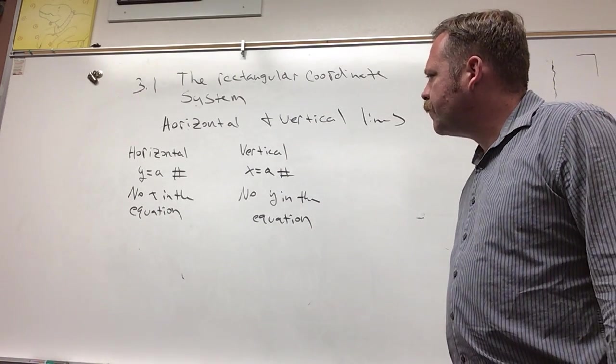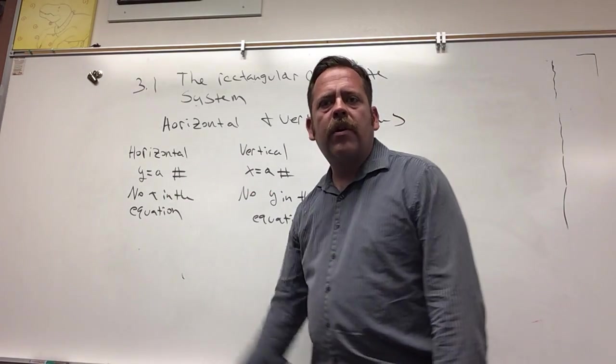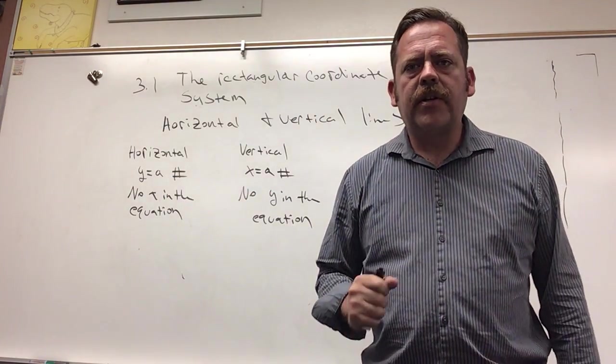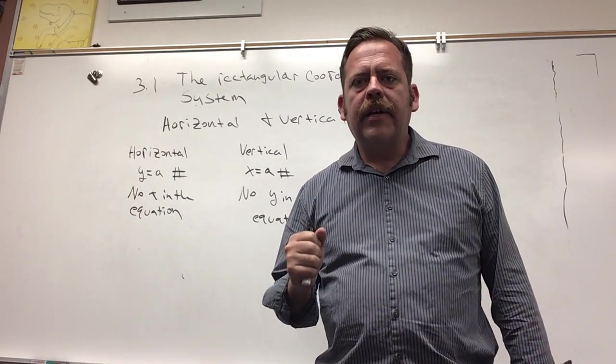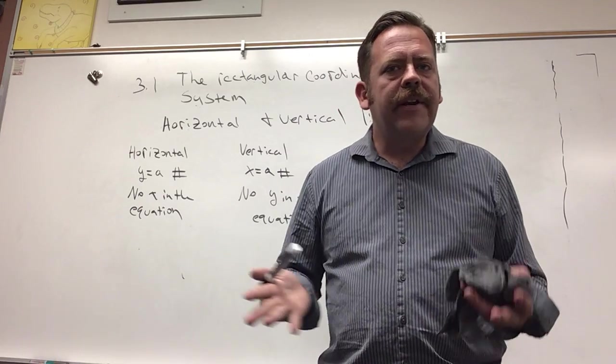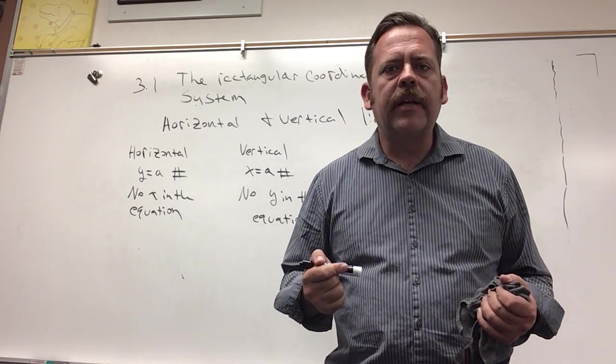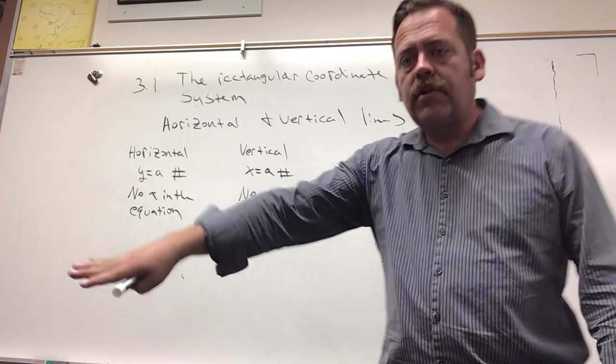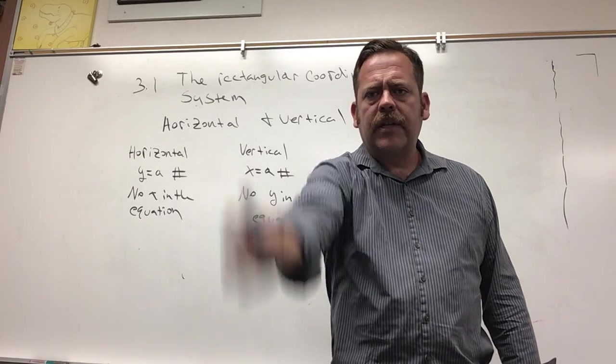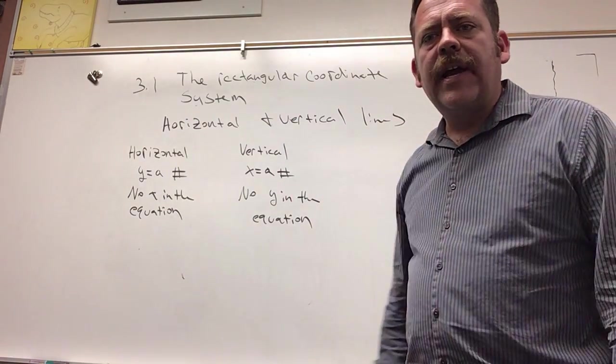Horizontal lines. Notice in all of the equations we've talked about so far, we had both a y and an x in it. These are still going to be linear equations - their graph is still going to be a line. But we're going to notice if it's horizontal, which is like flat, or vertical, which is straight up and down, it's going to be either missing the x or the y.